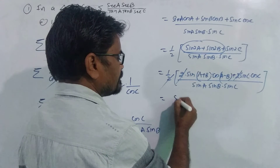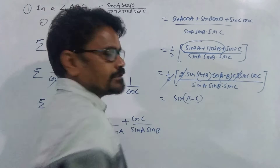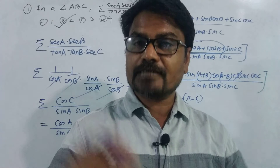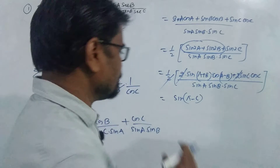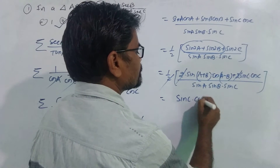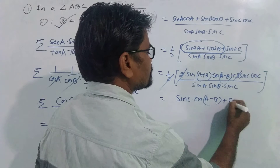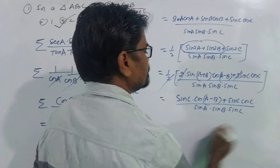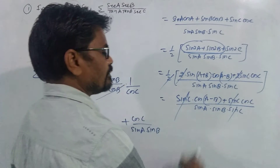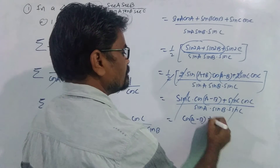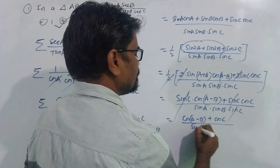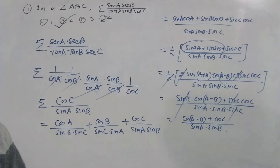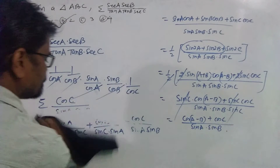Now sin(A + B) can be written as sin(pi - C), because A + B + C = pi, therefore A + B = pi - C. And sin(pi - C) = sin C. So we have sin C · cos(A - B) + 2 · sin C · cos C in the numerator, divided by sin A · sin B · sin C. The sin C in numerator and denominator cancel, leaving [cos(A - B) + cos C] / (sin A · sin B).